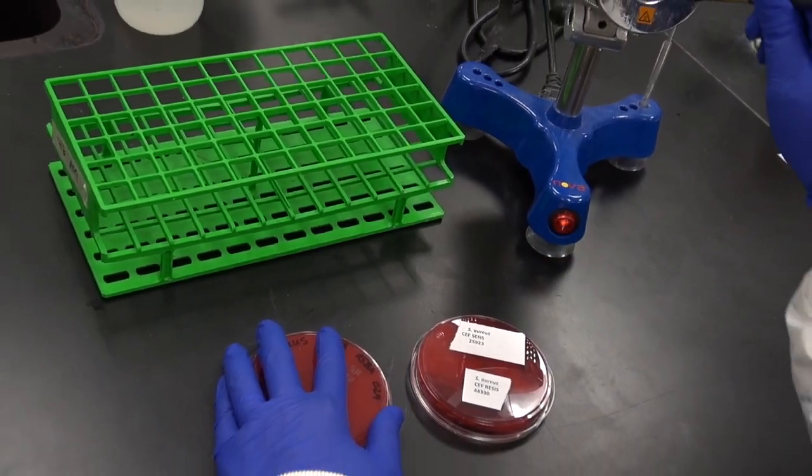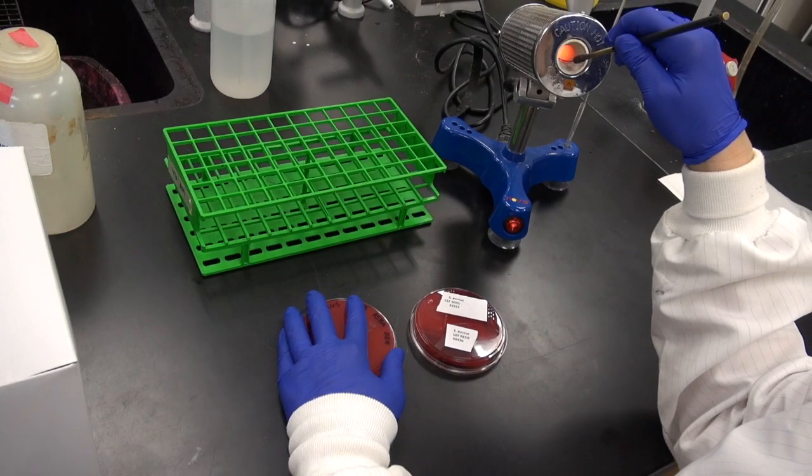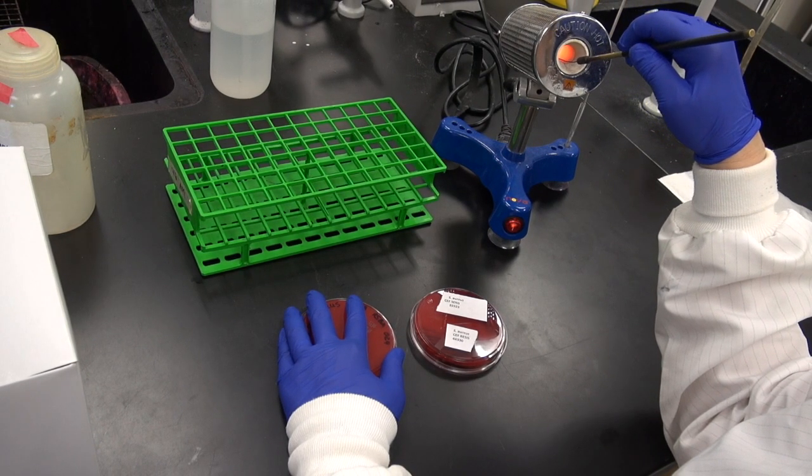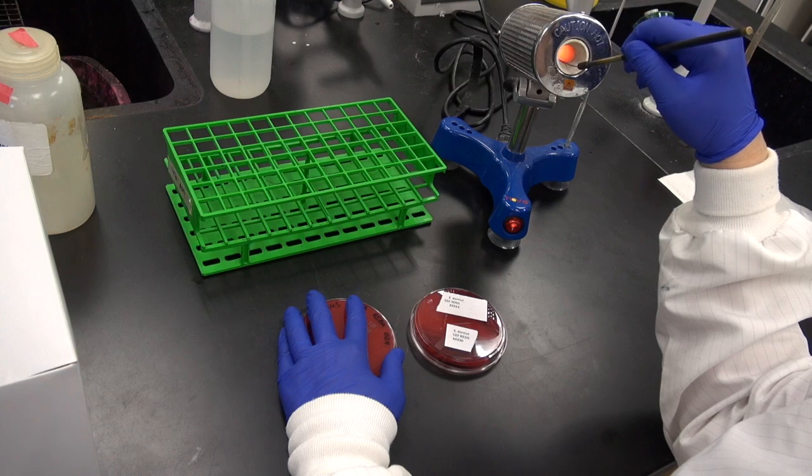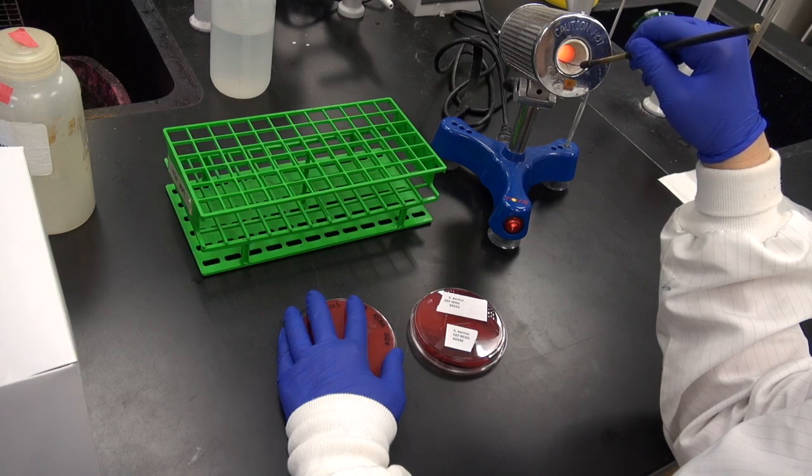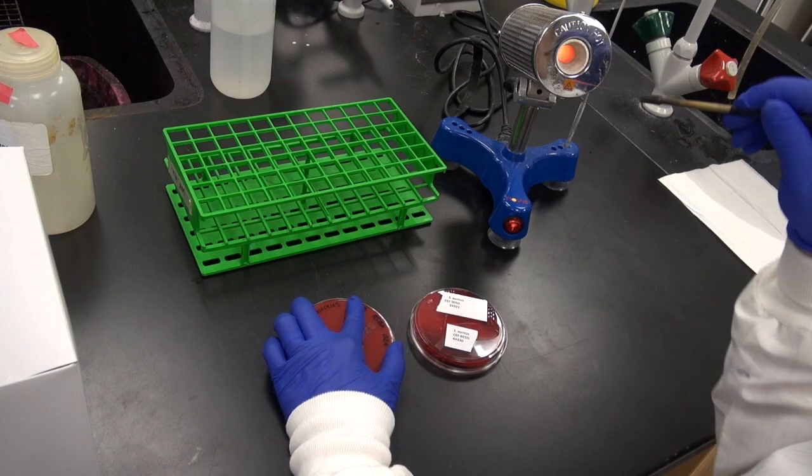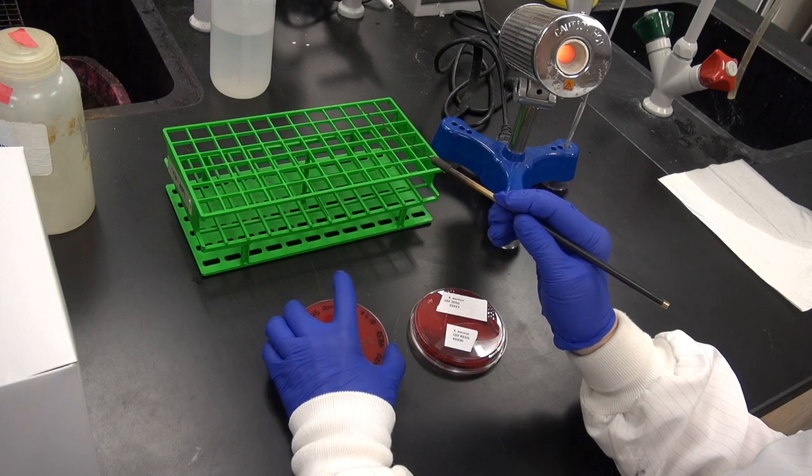The idea is to separate the bacterial cells so that they will grow into separate colonies. Close the plate, heat and cool the loop as before, and start the third quadrant.